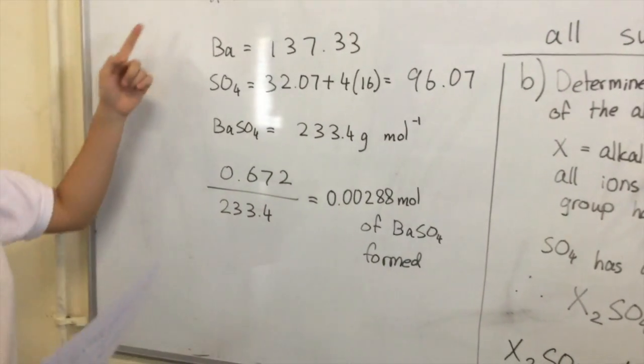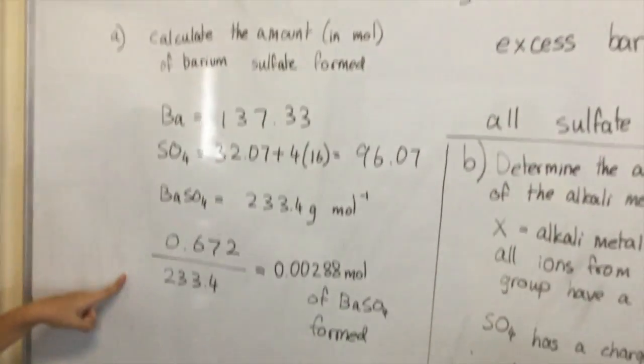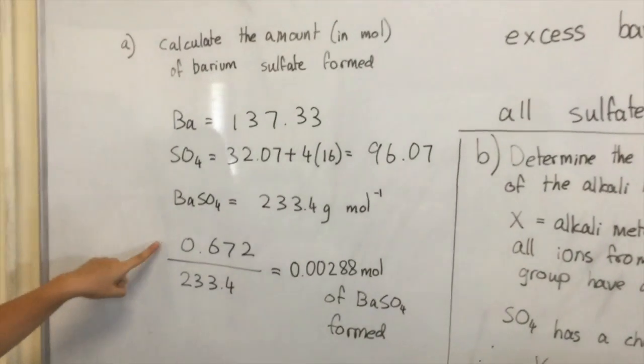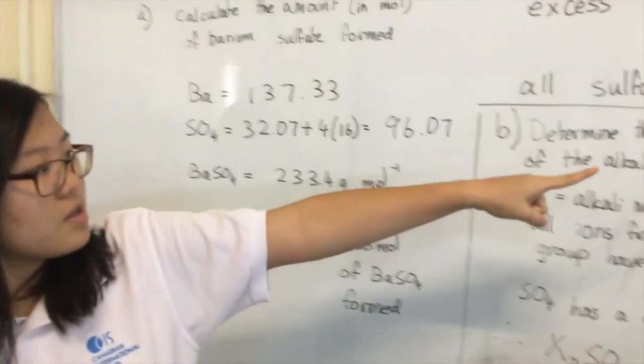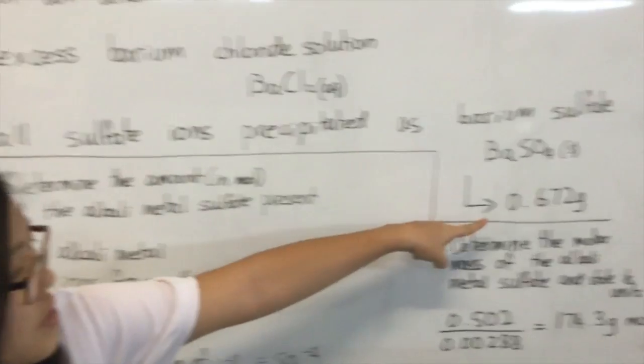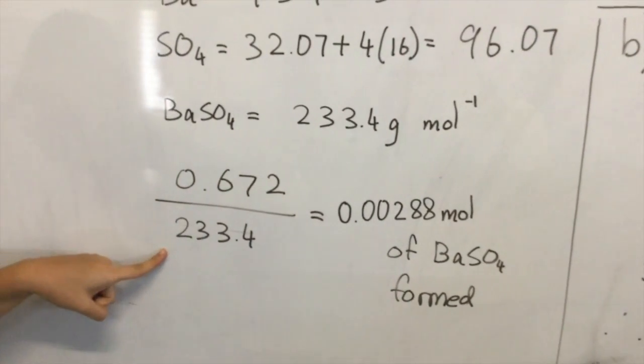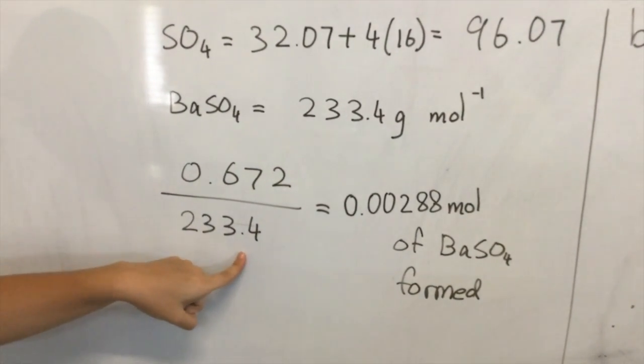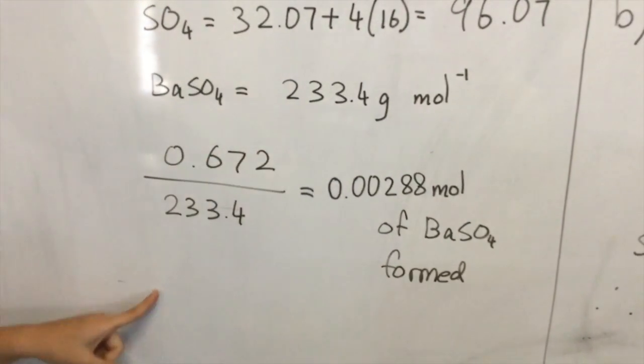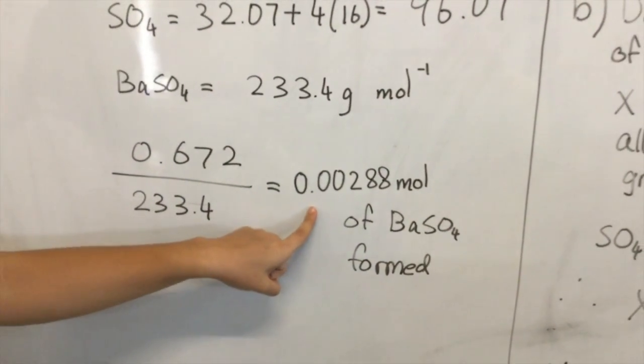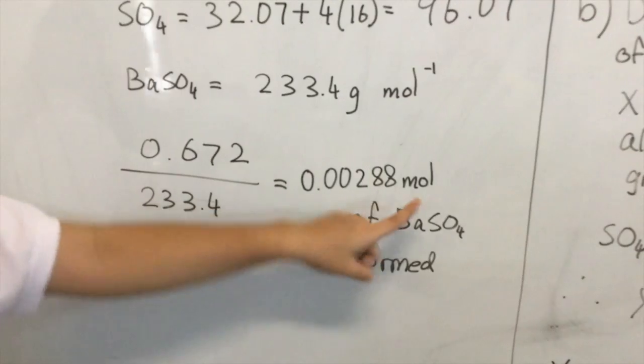It says calculate the amount in mole, so we have the grams. The grams is already given from the question, which is 0.672 grams. So 0.672 grams divided by 233.4 grams per mole gives you 0.00288 moles.